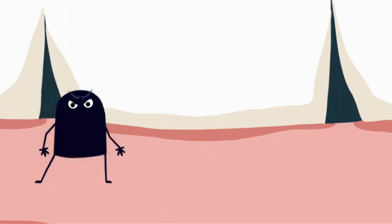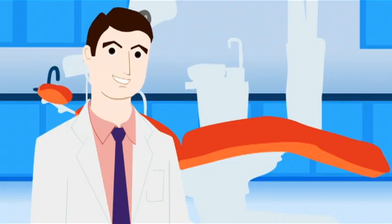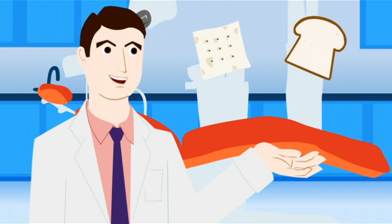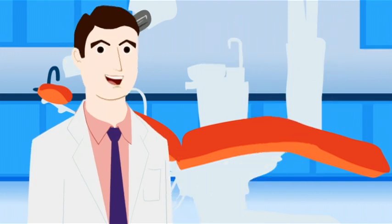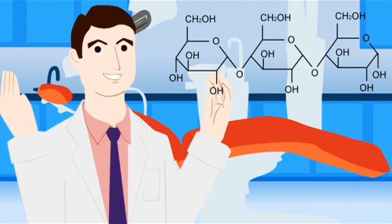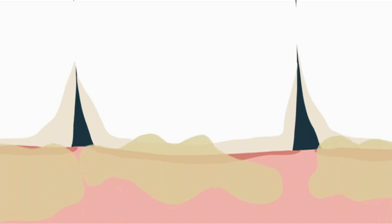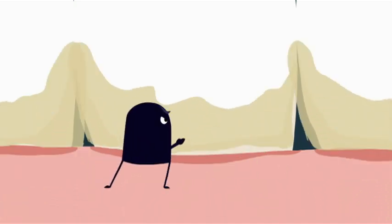The bacteria don't care what kind of sugar it is. For example, something like a saltine cracker or white bread or a hamburger bun. Those starches are basically long chains of sugar. Starchy foods tend to cling around the gum line and stick in between teeth.